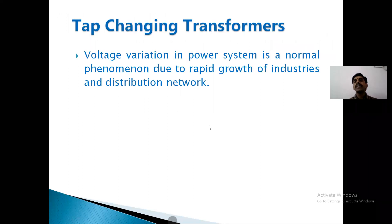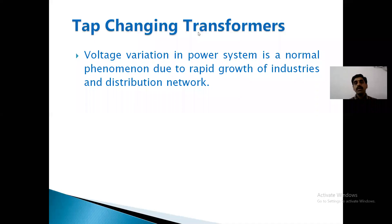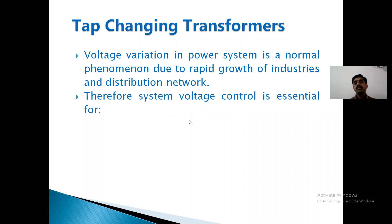Voltage variation in the power system is a normal phenomenon due to rapid growth of industries and distribution. You have to vary the voltage — it needs variable voltage. For this, the system voltage control is essential.